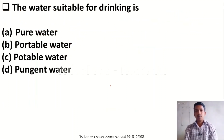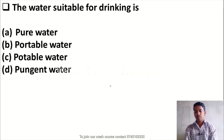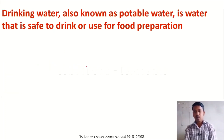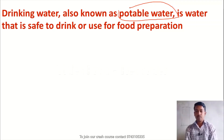The water suitable for drinking is: Option A, pure water; Option B, portable water; Option C, potable water; Option D, pungent water. Here the right answer is Option C — potable water is the correct answer. Drinking water is also known as potable water. Please remember it — it is the water which we use for drinking purposes and for food preparation.